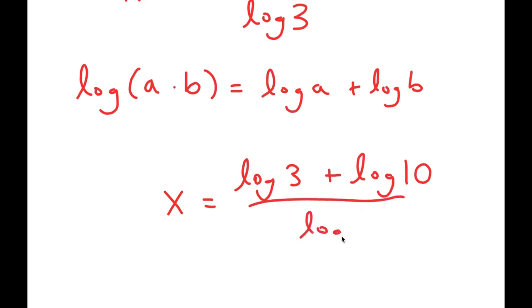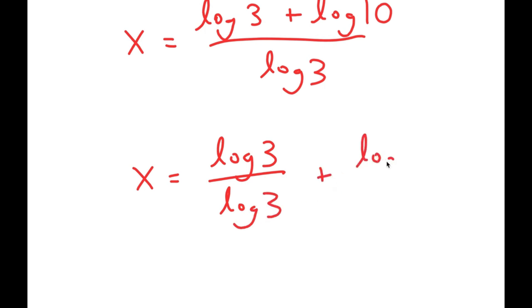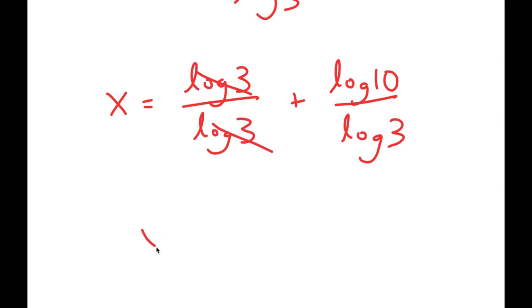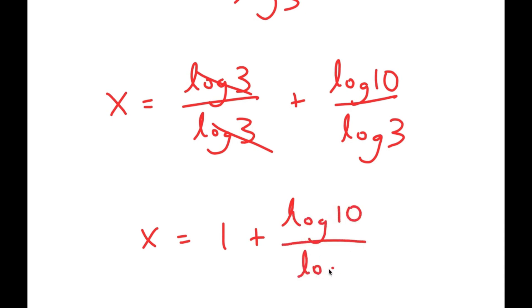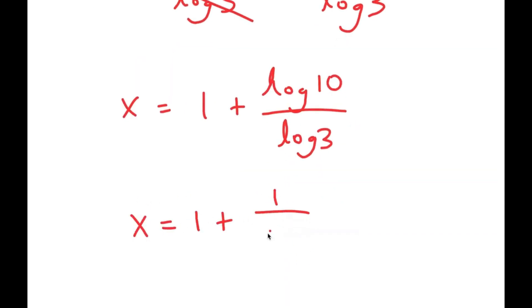Now I have this over log 3, so this becomes log 3 over log 3 plus log 10 over log 3. Log 3 over log 3 is 1, and log 10 is 1, so I get x is equal to 1 plus 1 over log 3.